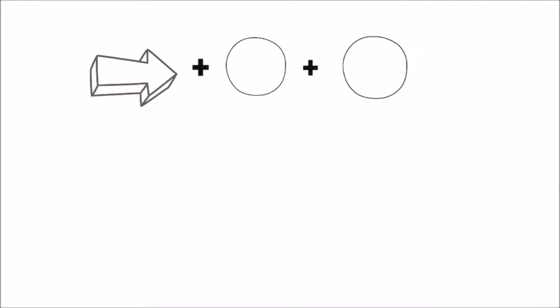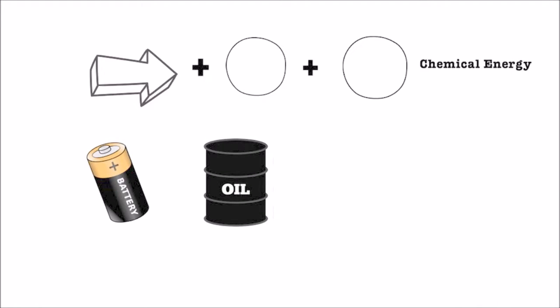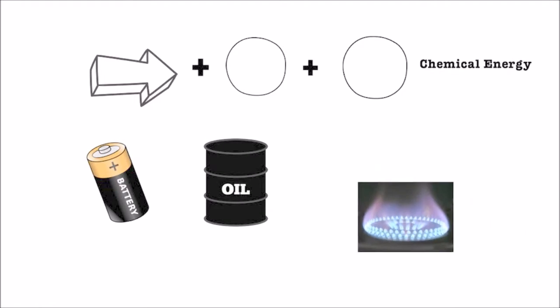Chemical energy is energy that is stored in the bonds of chemical compounds, which are also known as atoms and molecules. This energy is released in the chemical reaction, which often produces heat as a byproduct. Batteries, petroleum, natural gas, and coal are all examples of stored chemical energy.